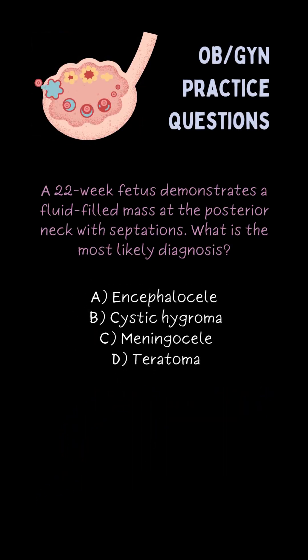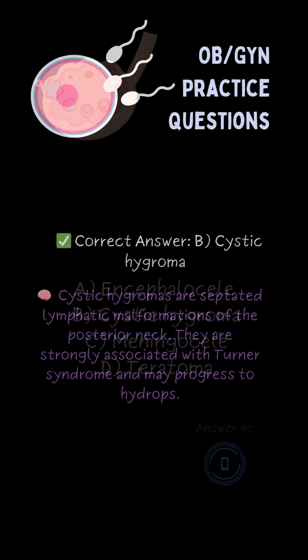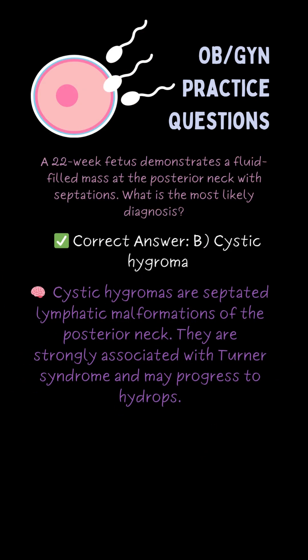A 22-week fetus demonstrates a fluid-filled mass at the posterior neck with septation. What is the most likely diagnosis? B. Cystic hygroma.